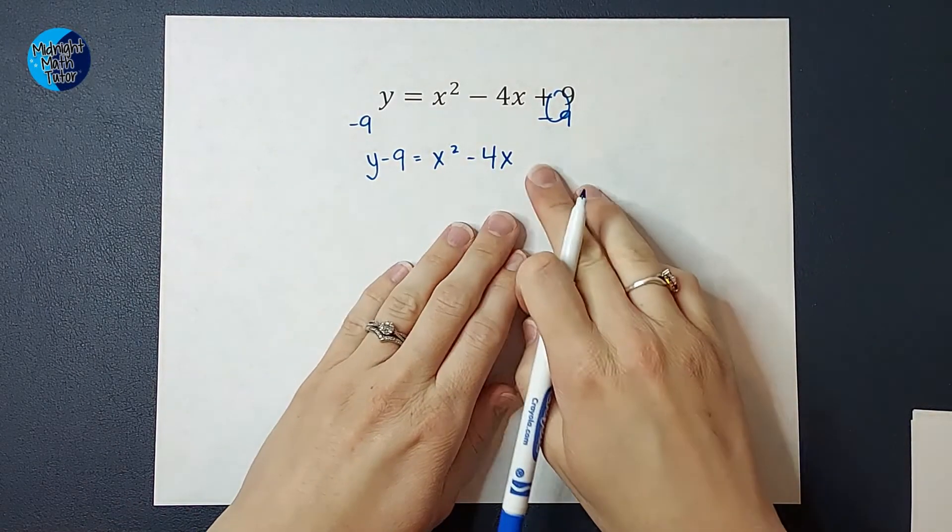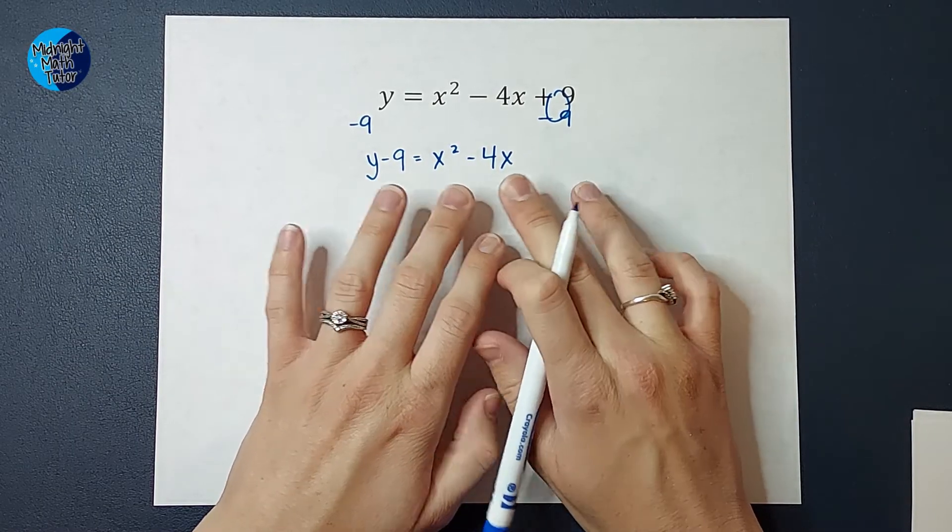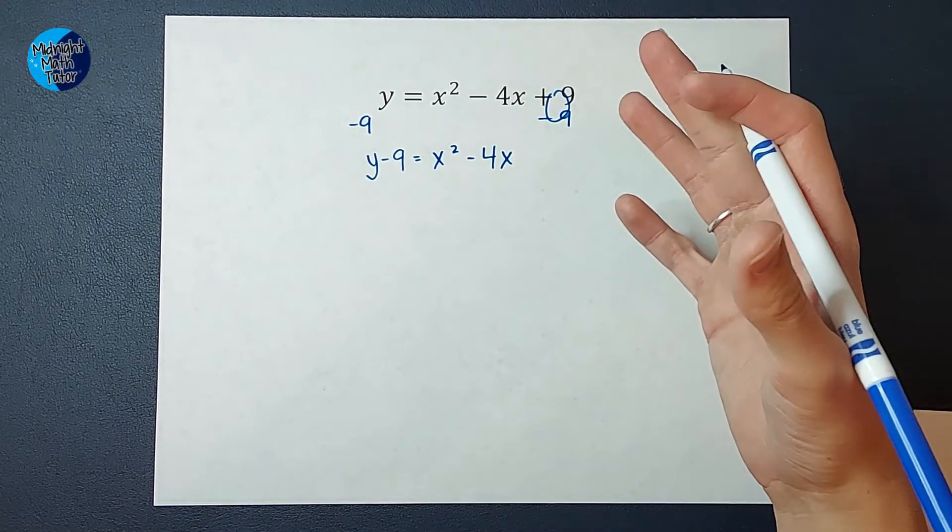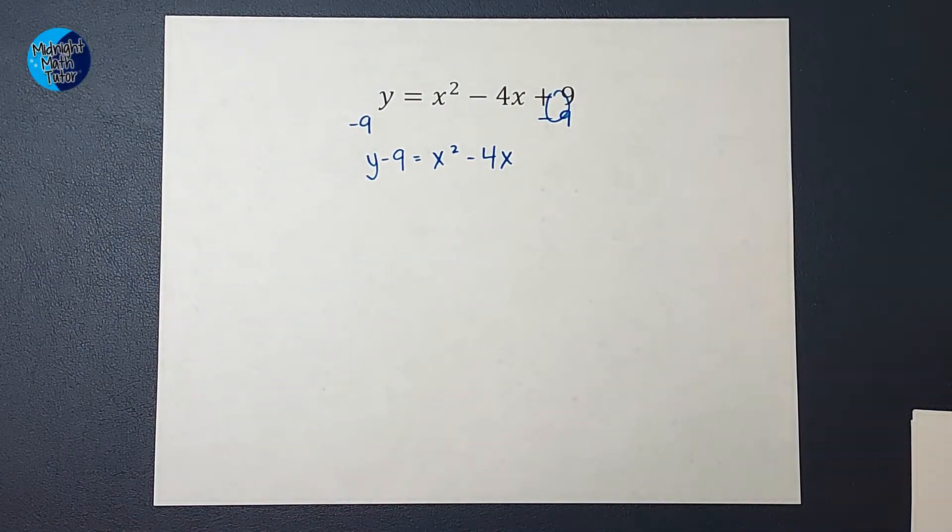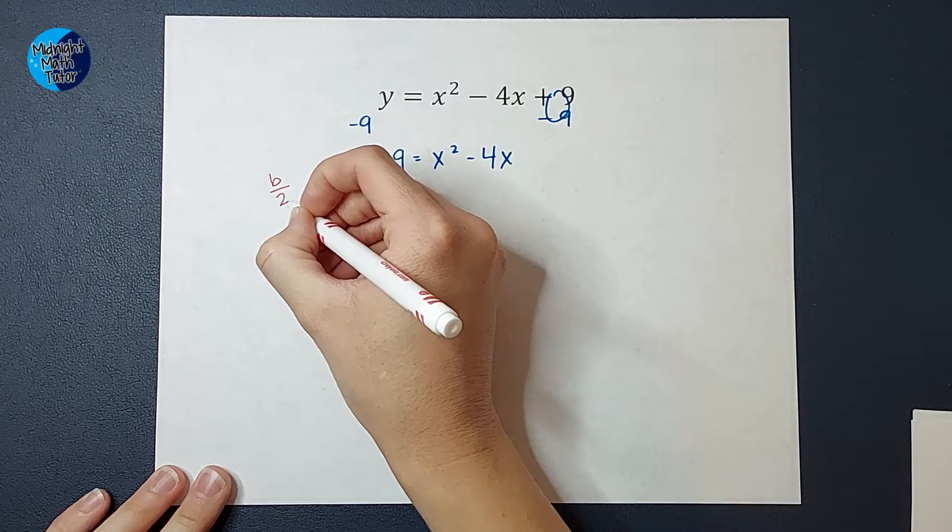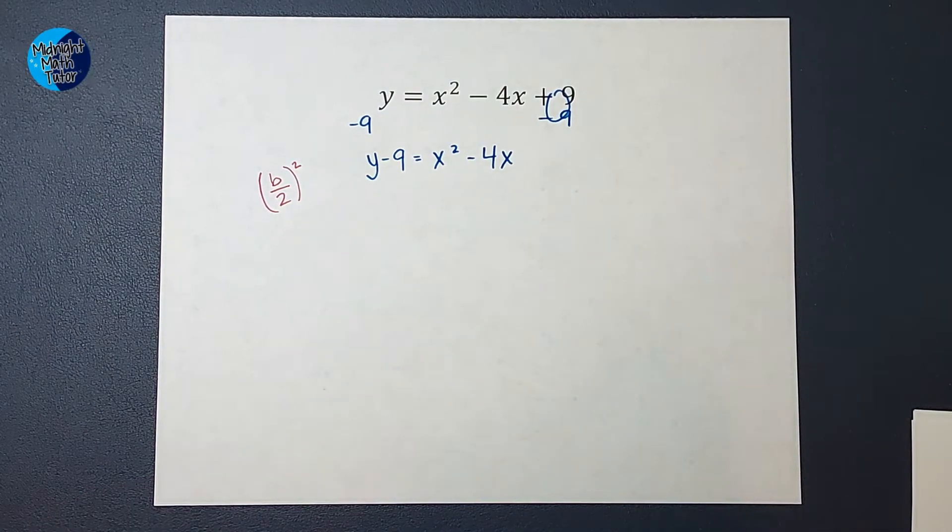Now I want to know what number I can add or subtract here that will make this factor to a parentheses squared. How do I figure out what that number is? Well, if we take b, divide it by 2, and square it, that number will be very helpful.